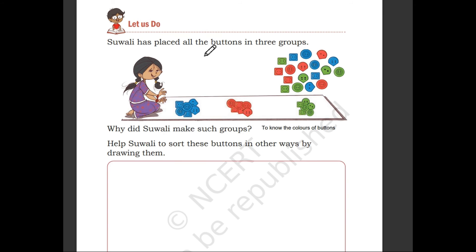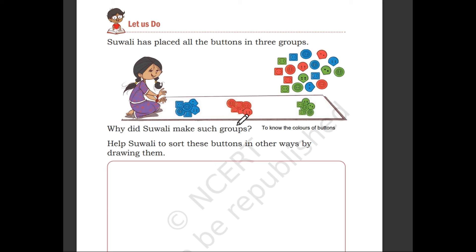Suali placed all the buttons in three groups. The buttons are grouped according to color — here is blue, here is red, and here is green. So why did Suali make such groups? To know the colors of the buttons. If Suali needs a red button, it can easily be removed.